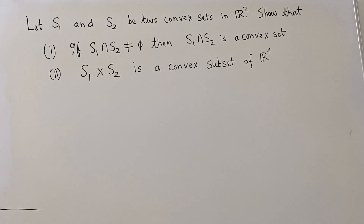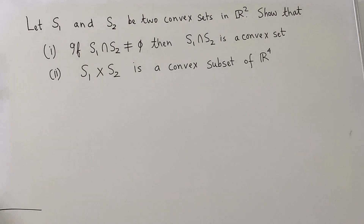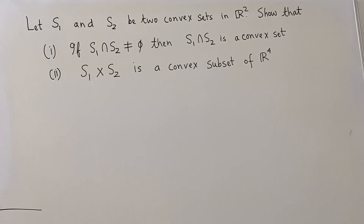Welcome to another edition of Math for No Reason. In this edition, we look at this problem. Let S1 and S2 be two convex sets in R². We have to show that if S1 intersection S2 is not a null set, then S1 intersection S2 is a convex set. And if we look at the Cartesian product of S1 and S2 as a subset of R⁴, then that is a convex subset of R⁴. So we have two results to prove and we will do it one by one.